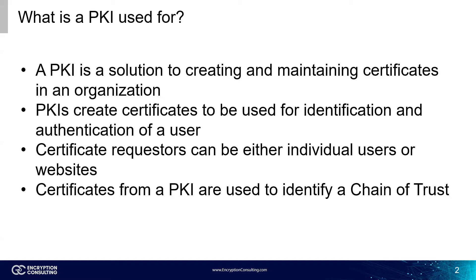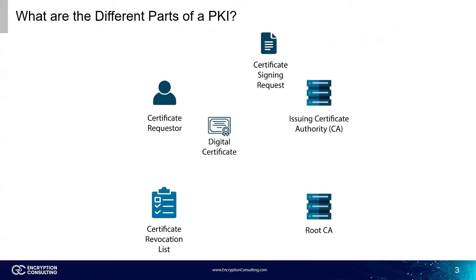Now I'll show you one of the smaller models of a PKI. This PKI structure is fairly simple — it's a two-tier model using just an issuing certificate authority and a root CA. There are much more complicated models, like the three-tier model, that use intermediate CAs as well as extra issuing CAs, but we won't deal with that right now.